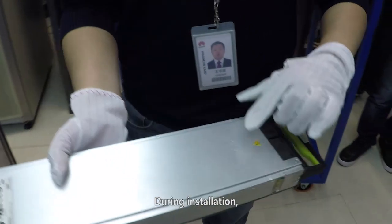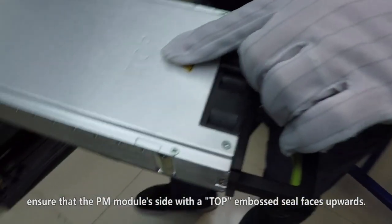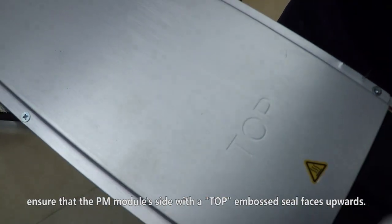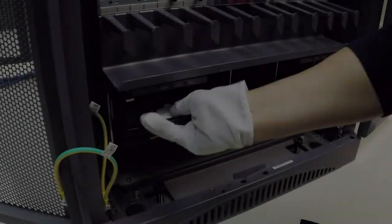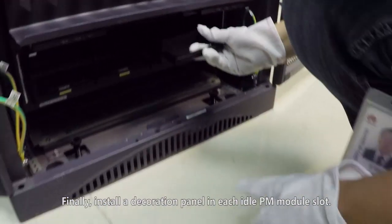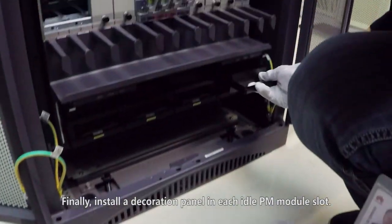During installation, ensure that the PM modules side with a top embossed seal faces upwards. Finally, install a decoration panel in each idle PM module slot.